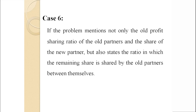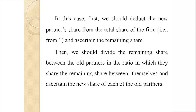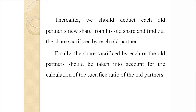Case number 6: if the problem mentions not only the old profit sharing ratio of the old partners and the share of the new partner, but also states the ratio in which the remaining share is shared by the old partners between themselves. In this case, first we should deduct the new partner's share from the total share of the firm (i.e., from 1) and ascertain the remaining share. Then we should divide the remaining share between the old partners in the ratio in which they share it, and ascertain the new share of each old partner. Thereafter, we should deduct each old partner's new share from their old share to find the share sacrificed. Finally, the share sacrificed by each old partner should be taken into account for the calculation of the sacrifice ratio.